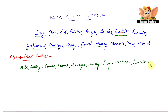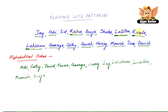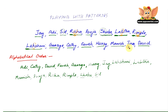Then we move on. We have Manish, then Pooja. And we have two names again beginning with R. We follow the same rule — we have Richa and Rimple. Richa comes before Rimple because C comes before M. So it's Richa, then Rimple. And the same with Shoba and Sid — H comes before I, so Shoba comes first, then Sid. And lastly, we have Tina.